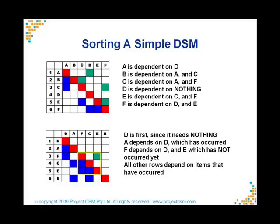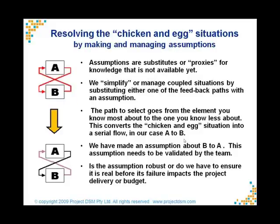We then take the next least dependent item - that's A - and go through, ranking the whole lot from least to most dependent. A pretty magic thing happens: you reduce the above-diagonal potential problem areas from 4 down to just 1, which is a pretty significant improvement for such a relatively simple technique.